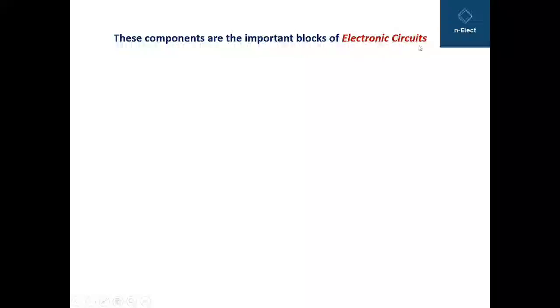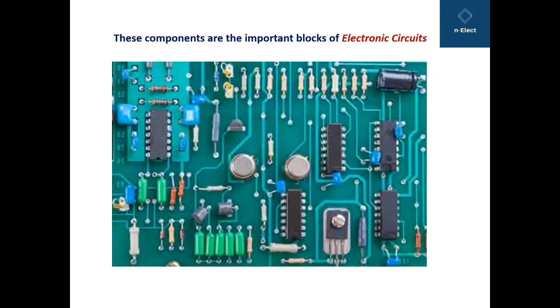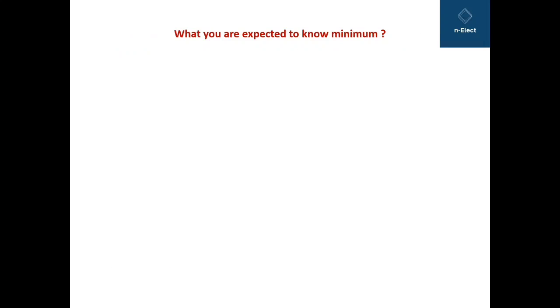When these components are placed together and connected in a proper way they make the big electronic circuit and that's why they are called the important blocks of electronic circuits. As an example I can show you this diagram where you can see the green board in the background which is called actually the PCB and here you can see number of active and passive components together placed and interconnected properly to get the required output from a circuit. This is how the components work in a circuit and give you the required output.